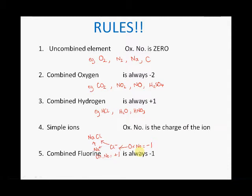Rule five: combined fluorine is always negative one. So anything that's got fluorine, not as the element F₂ but as part of an actual compound — for instance, hydrogen fluoride — the fluorine's oxidation number is going to be negative one. Now we can look at applying some of these rules to some examples to work out oxidation numbers.